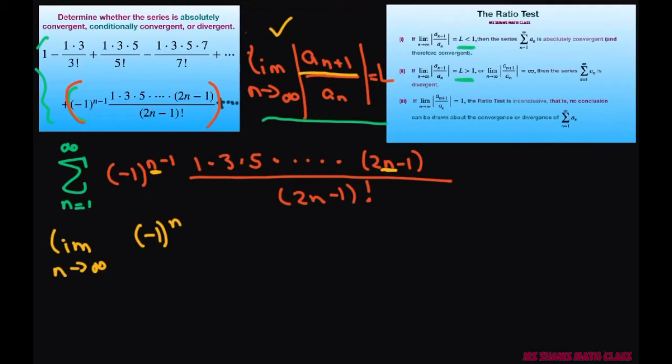And then we're going to go ahead and continue writing times 1 times 3 times 5 times dot dot dot. Now this is going to be 2n minus 1. And then the next term would be 2n plus 1 minus 1, and this is going to end up being 2n plus 1.